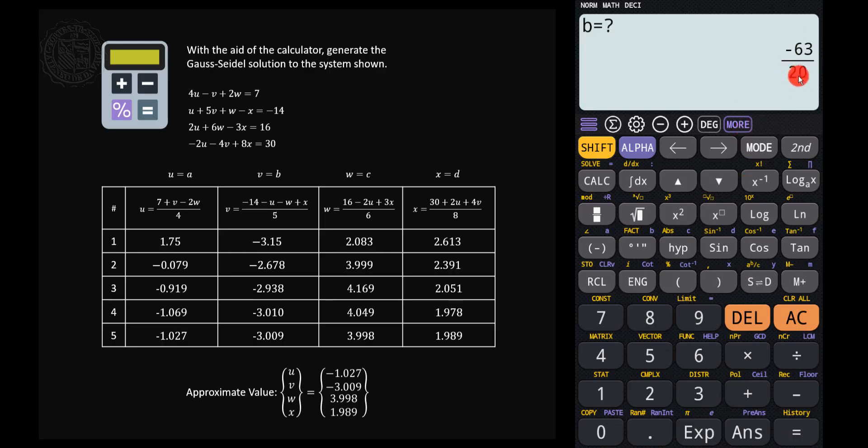The calculator will ask what's the next value of b, but by default, let's allow the calculator to use the latest available value of b. So let's just press the equals key, then equal, equal, then equal, equal. So in the second iteration, we find that a is equal to negative 0.079, b is equal to negative 2.678, c is equal to 3.999, and d is equal to 2.391.